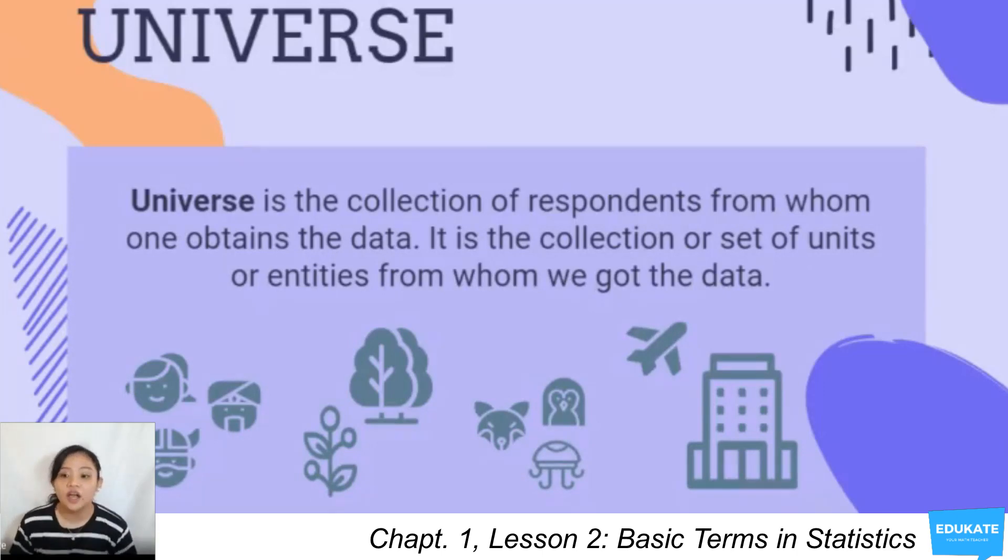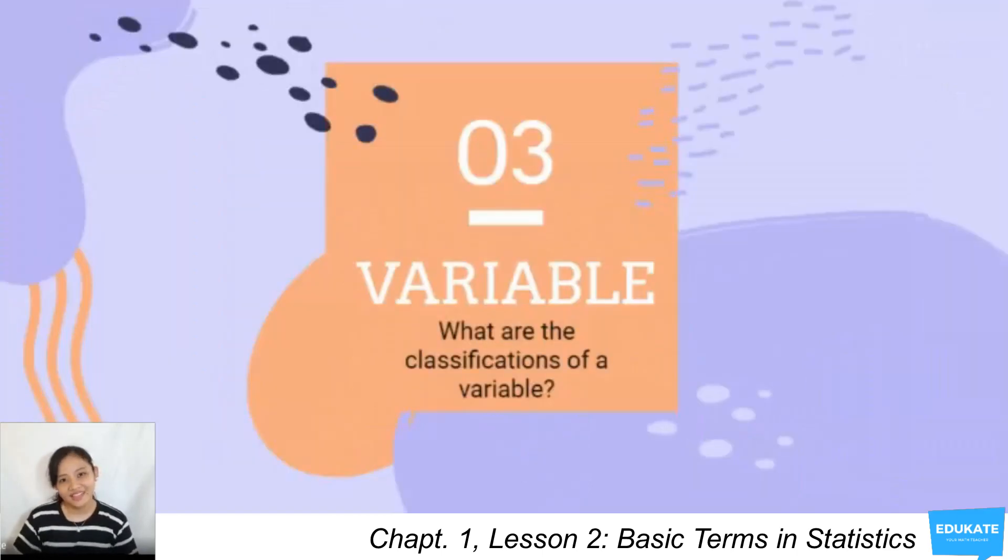With the data collection activity, our universe is humans. However, take note that there are studies where the observations are taken from plants, from animals, or even from non-living things like buildings, vehicles, farms, etc. On the other hand, the information asked from the respondents are referred to as the variables of the study. So in the data collection activity, there are 12 variables.